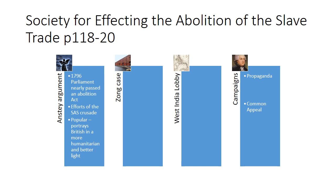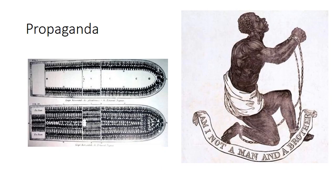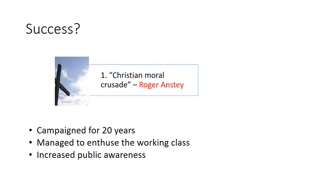What the SAS did was develop quite an extensive propaganda campaign. If you flick to page 120, they would have that picture at the bottom of a cup — when you're doing the washing up, your tea cup, coffee cup, or sugar bowl had that image on it. They also did drawings of the ships and petitions. They made it popular amongst ordinary people because lots of people working in factories could relate to this aspect of slavery. There's the slave drawing of the Brook ship and the Wedgwood drawing on the porcelain cups. Overall, Anstey is saying they campaigned for over 20 years, managed to enthuse the working class, and massively increased public awareness.